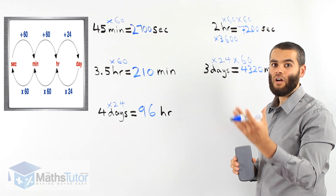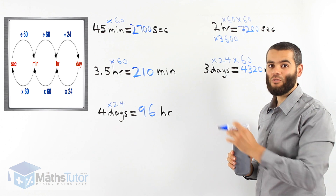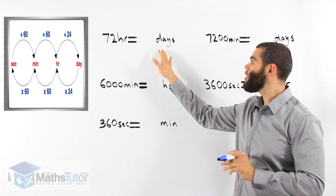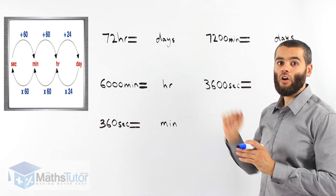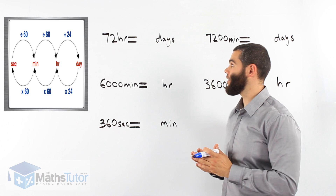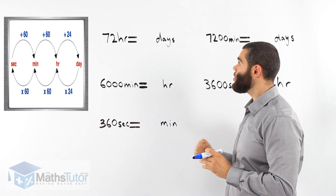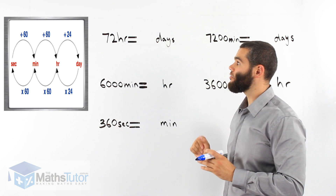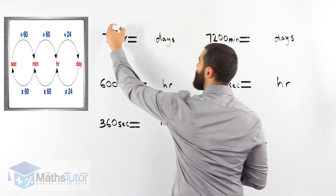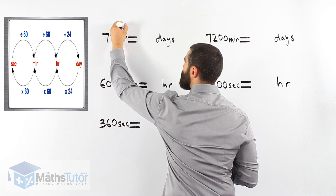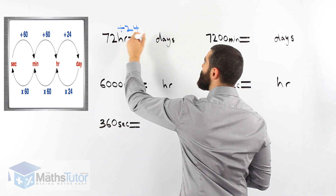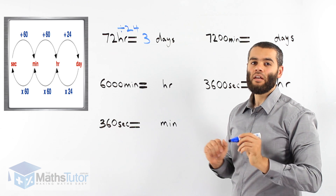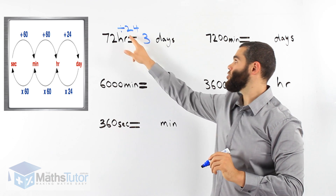Now I'm going to show you how to go the other way — from a small unit of time to a large unit of time. We follow a similar procedure. Looking at our diagram, we're going from small to big. We're going from hours to days, and going from hours to days we divide by 24. Always show your working out. 72 divided by 24, we have three days. 72 hours equals three days.